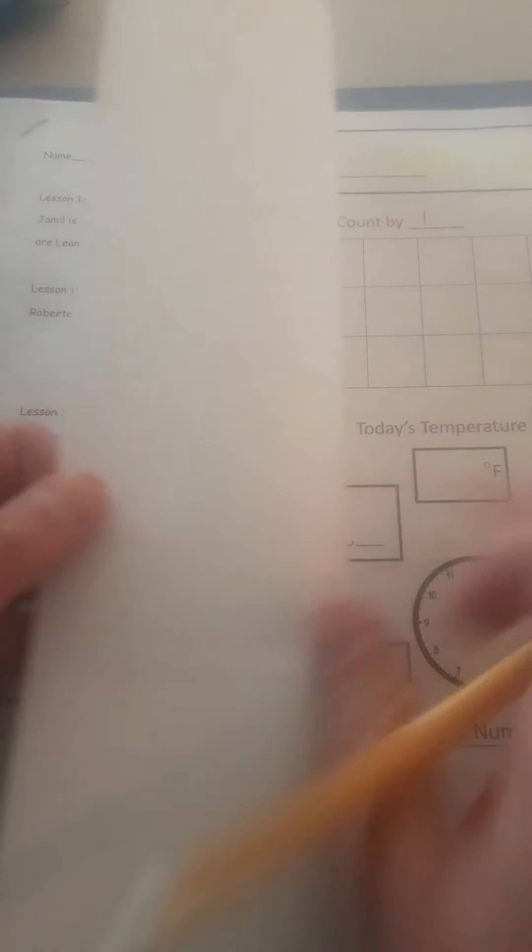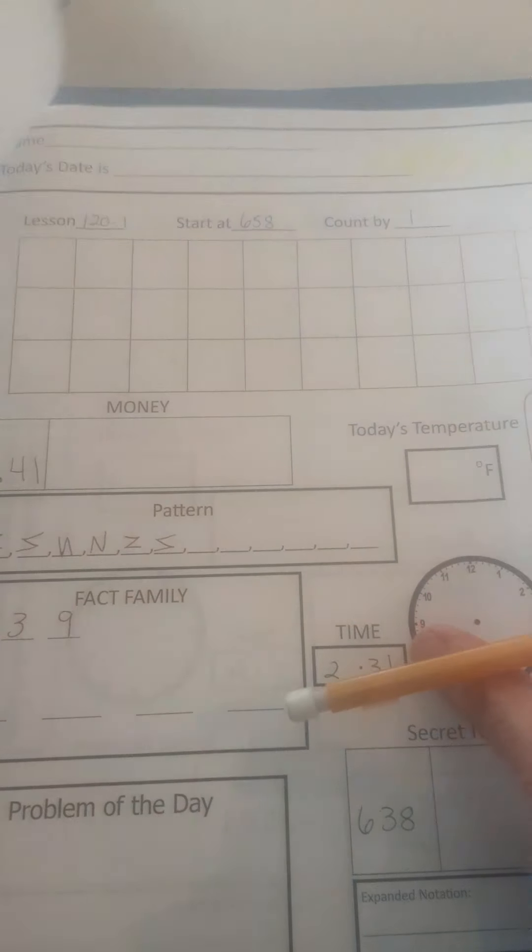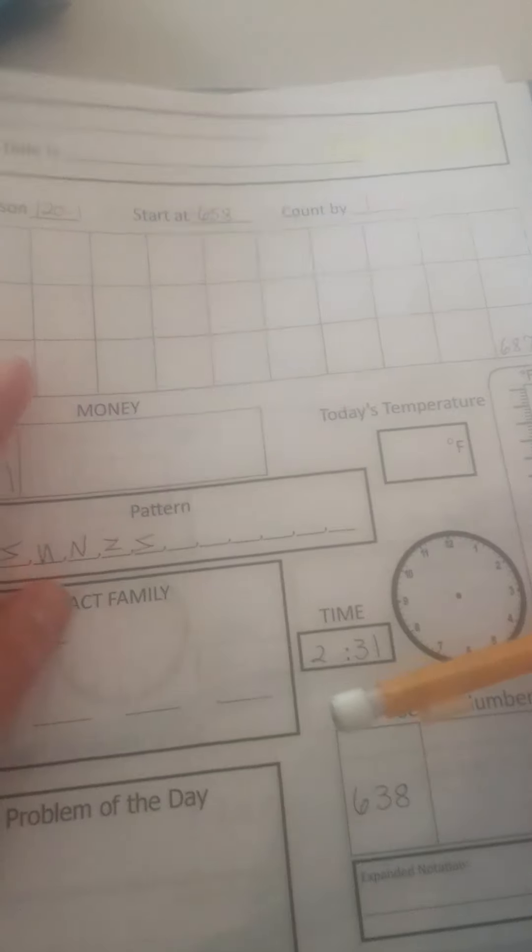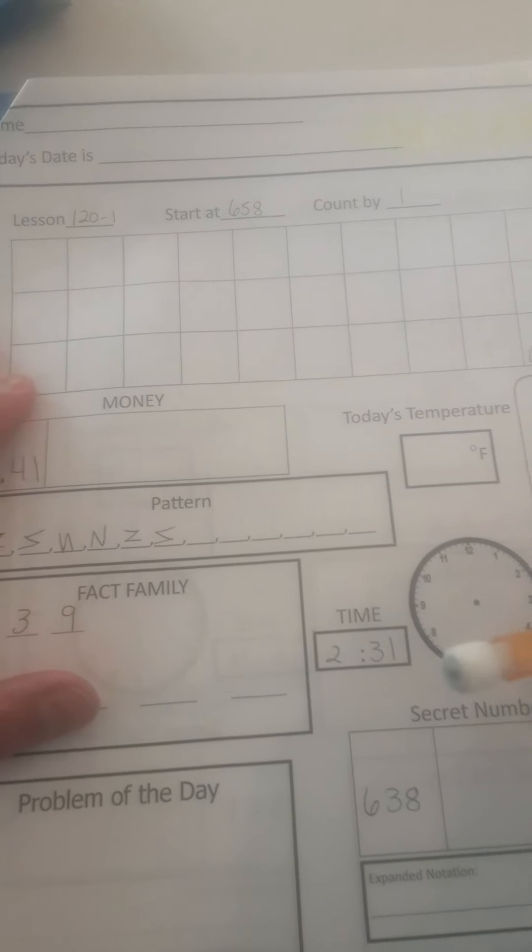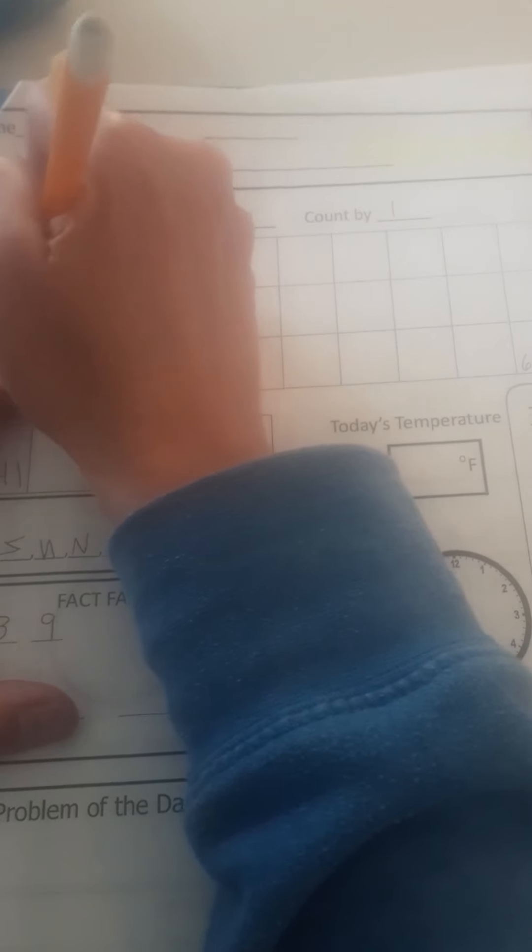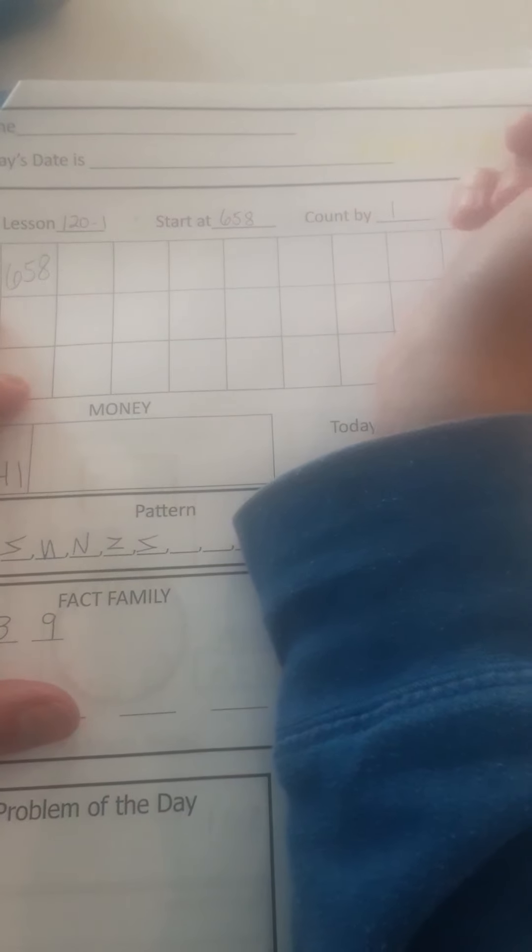Alright, go ahead and turn it to 20-1 for your Math Meeting. Alright, today we are starting at 658, and we are just counting by ones.